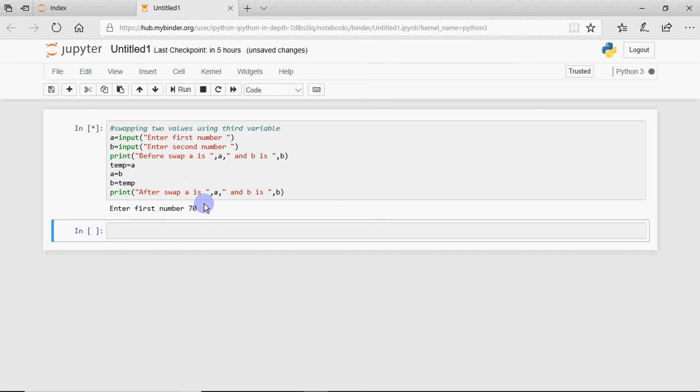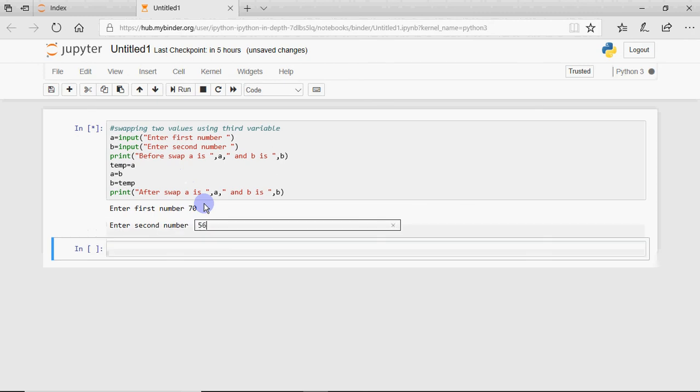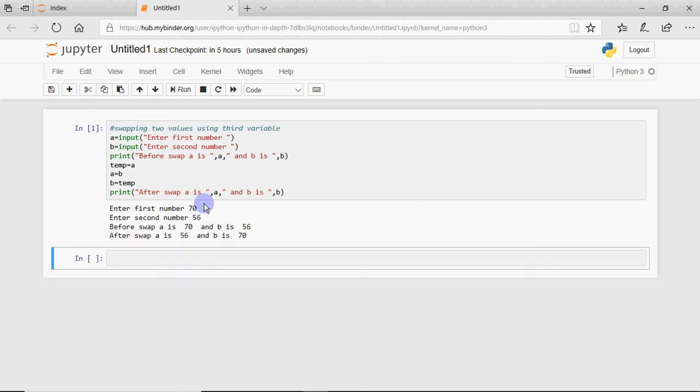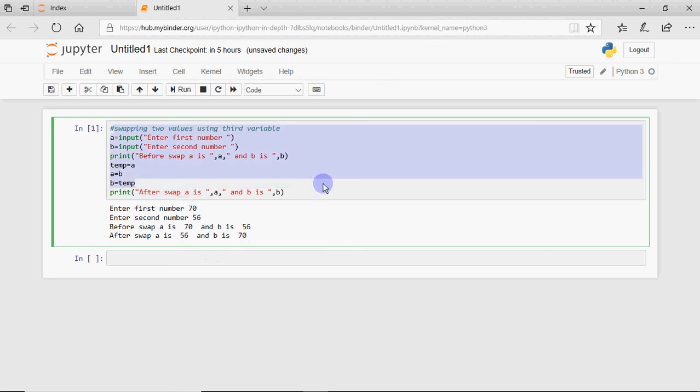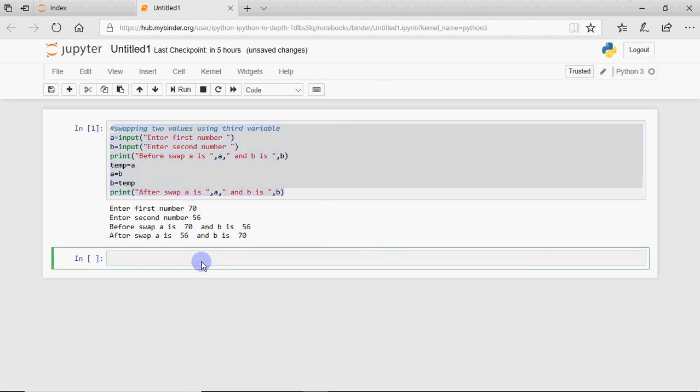Enter the first number, say 70. Second number is 56. So it shows you before swap, A is 70, B is 56, and after swap, A is 56, and B is 70. So that's how we modify the values with the help of third variable.